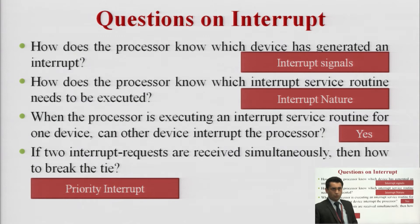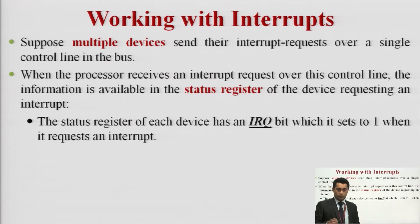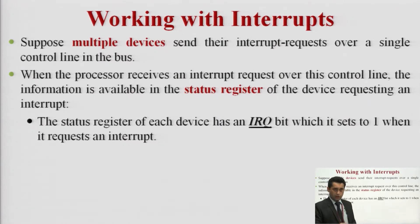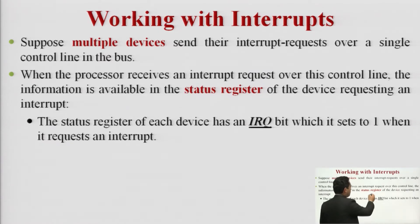Let us discuss these questions in detail in the next four slides. The very first thing is to understand how a particular interrupt is in execution. The interrupt request is coming to the CPU; based on the interrupt request, the device has been recognized by the CPU. The processor receives the interrupt request, also known as IRQ — interrupt request over the control signal.